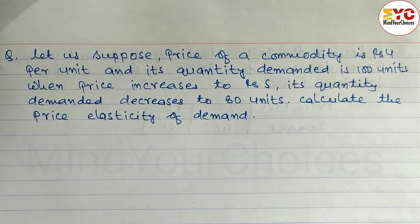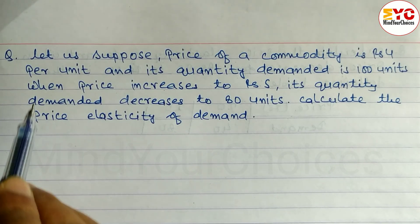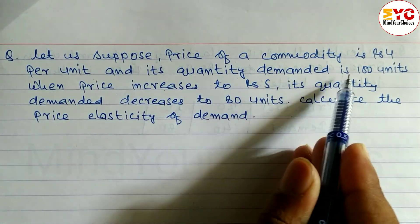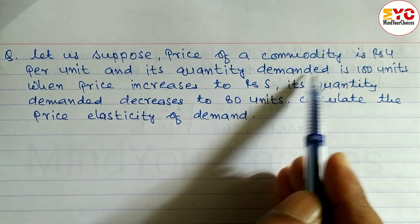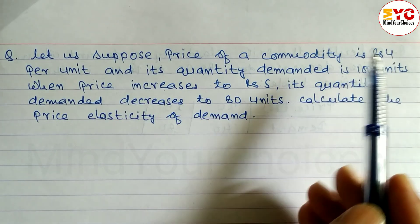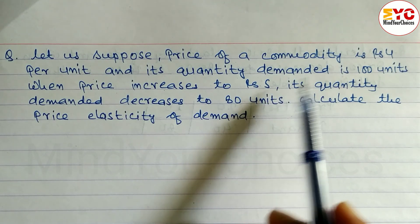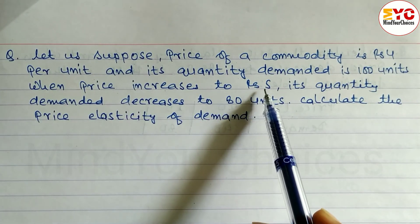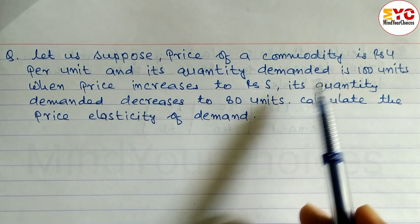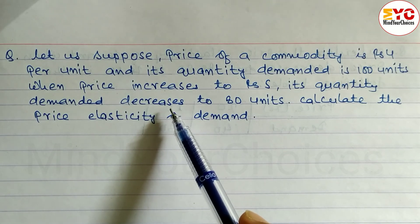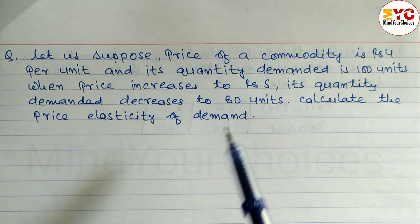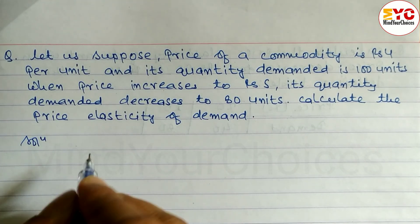Your question: Class XI Economics, elasticity of demand and supply. Let us suppose the price of a commodity is Rs. 4 per unit and its quantity demanded is 100 units. When the price increases to Rs. 5, its quantity demanded decreases to 80 units. Calculate the price elasticity of demand.